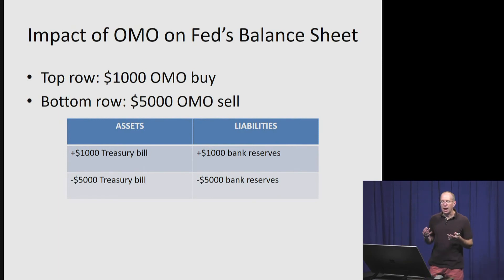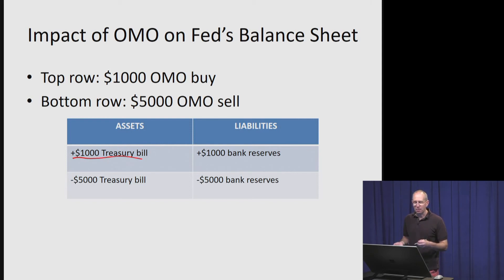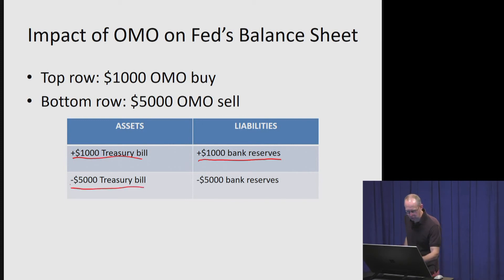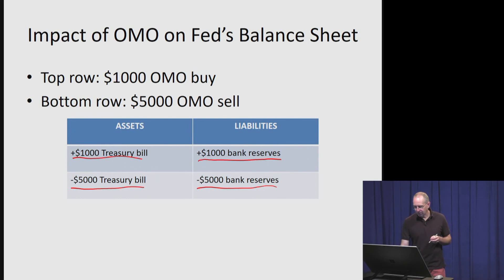In terms of the impact of open market operations on the Fed's balance sheet: if the Fed wanted to buy a $1,000 Treasury bill, it would show up as an asset, and they would credit a bank's reserve account with $1,000. Likewise, if they made a $5,000 open market sale, the Treasury bill would disappear from their asset side, and the commercial bank's reserve account would be debited by $5,000. The purchase and sale of securities thus increased and decreased the value of the Fed's balance sheet.